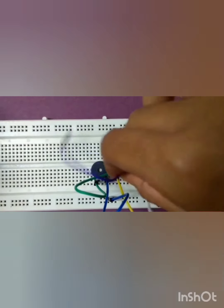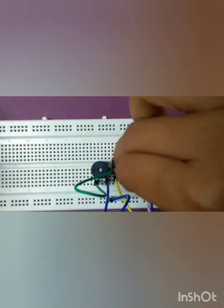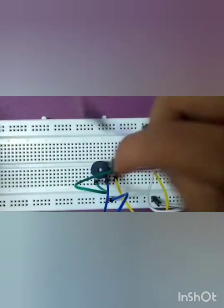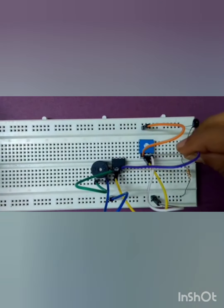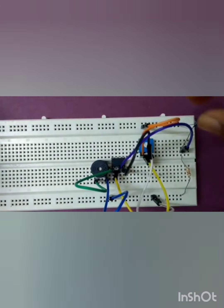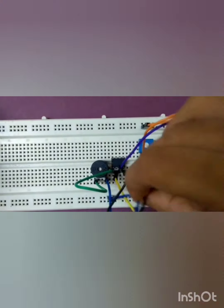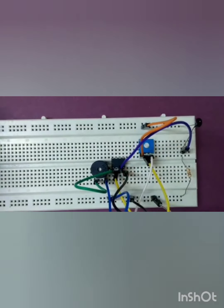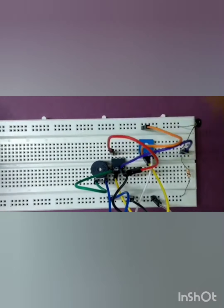Connect pin number 3 of the IC to the junction between thermistor and resistor. Connect pin number 4 to ground and pin number 8 to plus VCC.